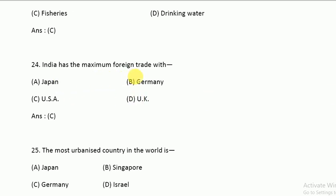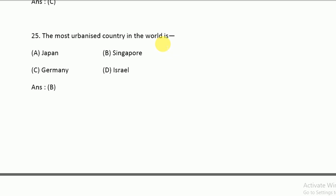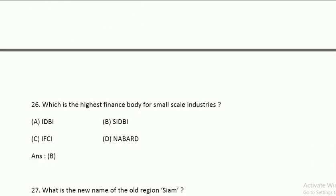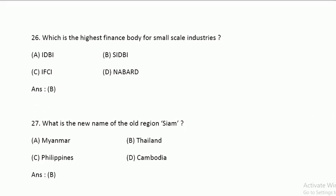India has maximum foreign trade. The most urbanized country in the world is Singapore. The highest financial body for small-scale industries is SIDBI.